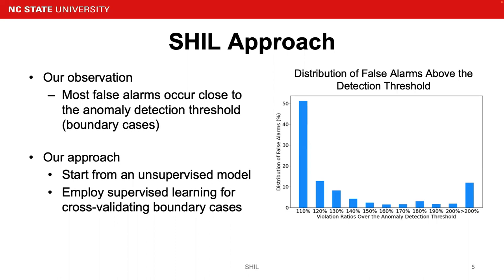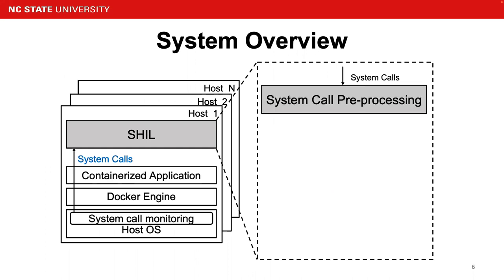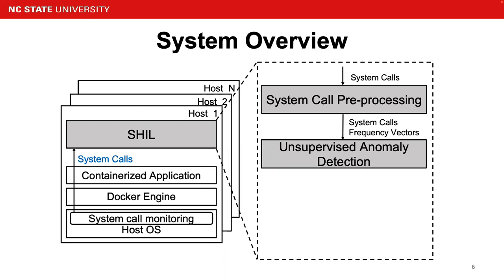Our approach stems from this observation. We start from an unsupervised model to capture unknown attacks to the containers, and then we employ supervised learning for cross-validating those boundary cases. Moving on to the system overview: SHAO continuously monitors the system calls from the containers. After capturing those system call traces, we perform the first step of system call preprocessing, and after processing we have system call frequency vectors. Those frequency vectors are then fed into the unsupervised model for anomaly detection.